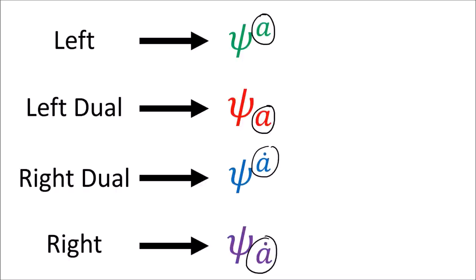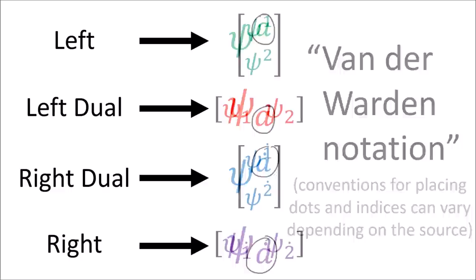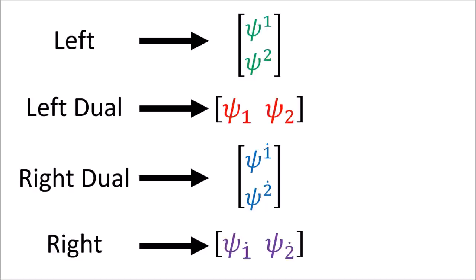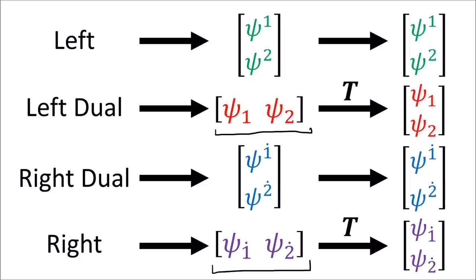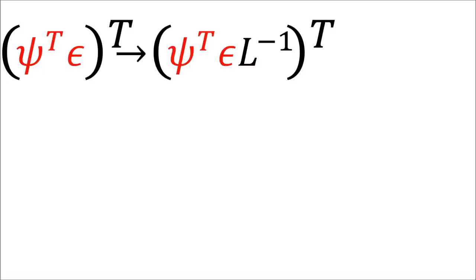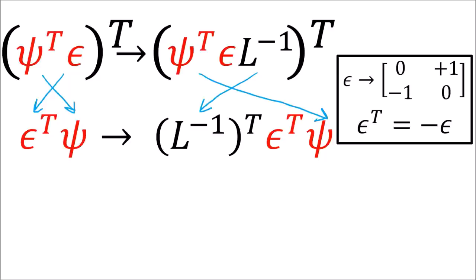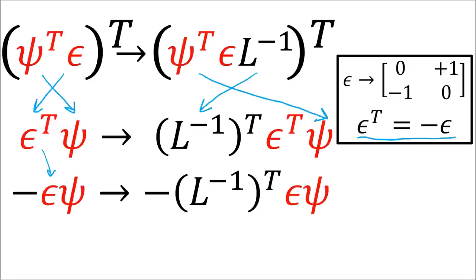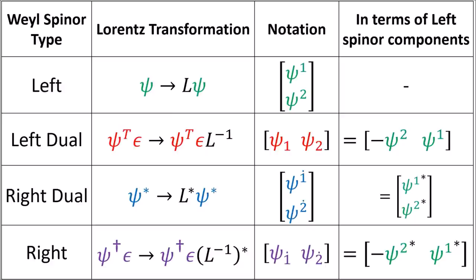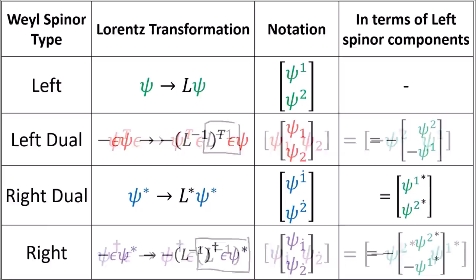Some sources prefer to write all Weyl spinors as columns only. To do this, we take the transpose of the spinors written as rows. Taking the transpose of the transformation, the transpose of epsilon is negative epsilon, but since we transpose epsilon on both sides, the negative signs cancel. So keep in mind how the transformation rules change when we take the transpose — in the column-only notation, the four transformations look different but are equivalent.